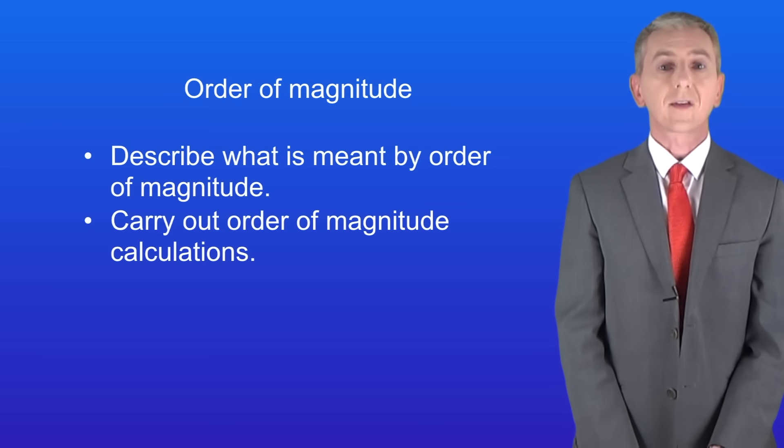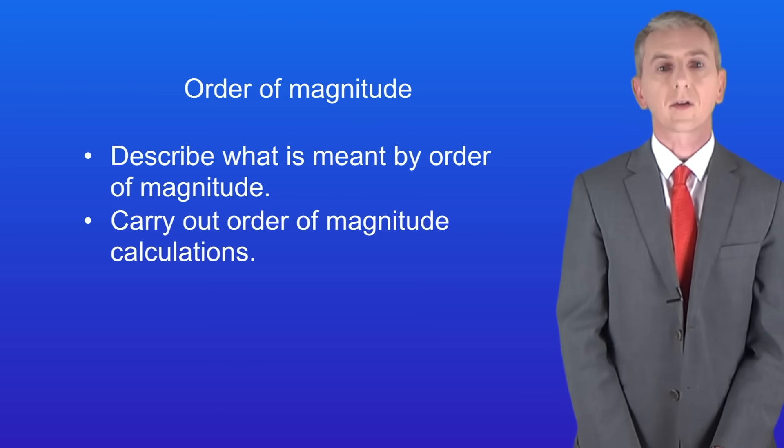We've already looked at the words that scientists use to describe the sizes of objects. For example, a millimetre is one thousandth of a metre. However, sometimes scientists want to compare the approximate sizes of different objects and for this we use the idea of order of magnitude.